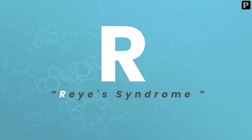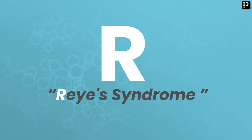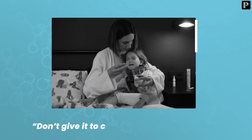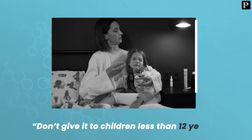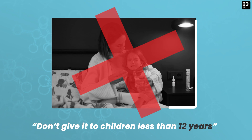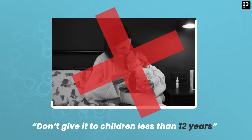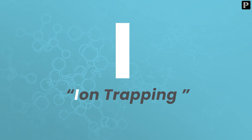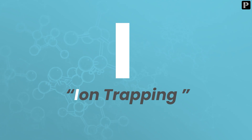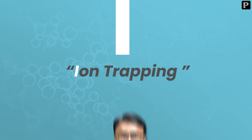R stands for Reye's syndrome — do not give aspirin to children less than 12 years, particularly if they have viral fever, as there is a risk of Reye's syndrome. The next letter I stands for ion trapping — aspirin has a pKa of 3.5; if it enters into the cell it becomes ionized and gets trapped.